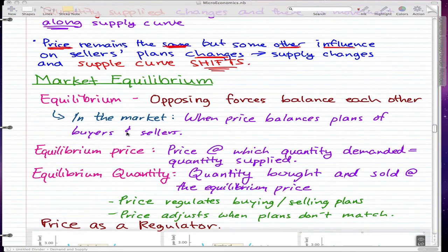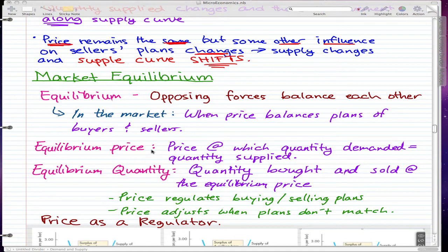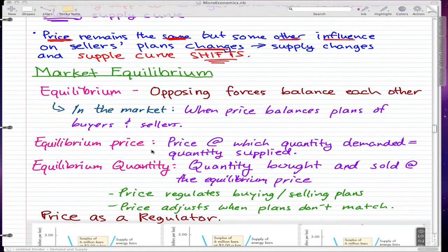Now there are two reasons that the market moves towards equilibrium. The first reason is because the price regulates the buying and selling plans of buyers and sellers. The second reason is the price adjusts when the plans don't match.